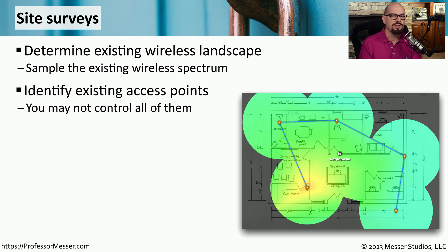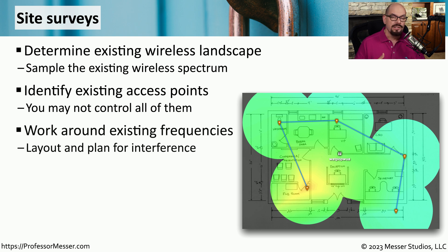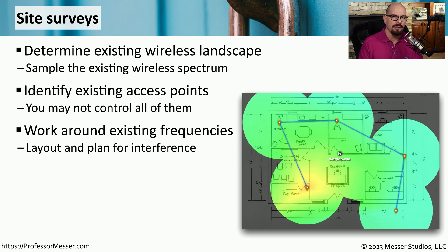These may be access points that are part of your network, or access points that are simply located in a close geographical area. If there are access points that are outside of your control, then you'll have to configure your access points to work around the existing frequency use. The site survey will detail everything about the current spectrum and give you an idea of what channels might be best for your wireless network.